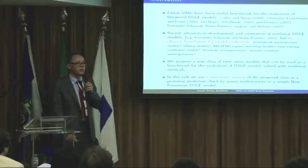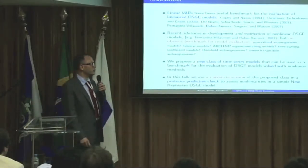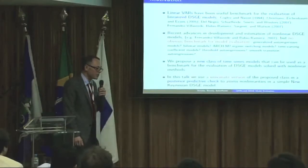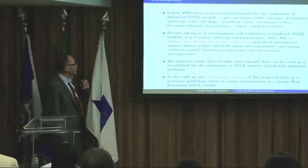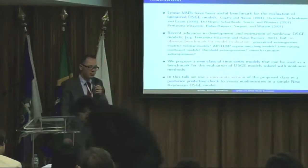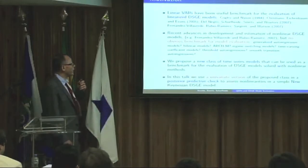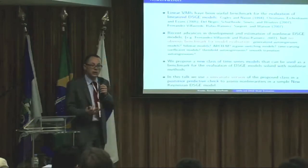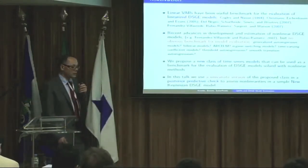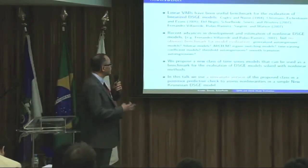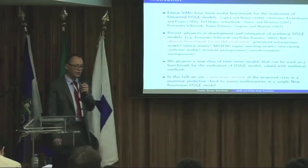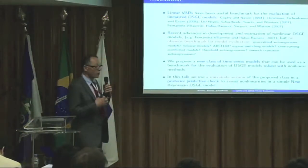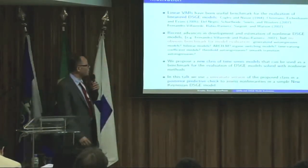A lot of the empirical work, in particular the econometric work, in the DSGE model literature has been done with linearized versions of these dynamic stochastic general equilibrium models. For these linearized models, vector autoregressions have been a very natural benchmark. People ask whether the response to a monetary shock or a technology shock generated by a DSGE model is similar to what we get from impulse response functions for vector autoregressions. There are many ways of implementing this basic idea econometrically.